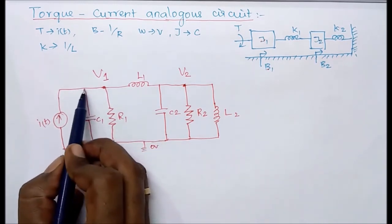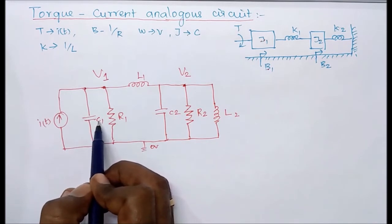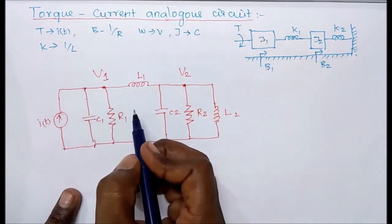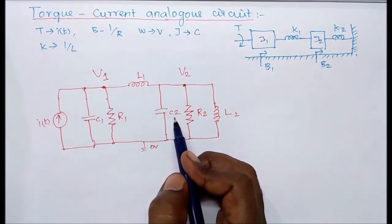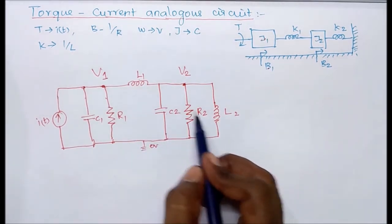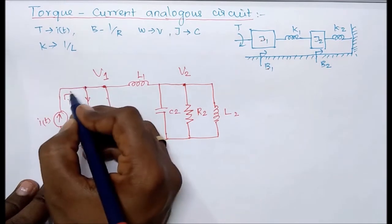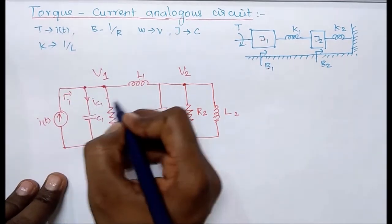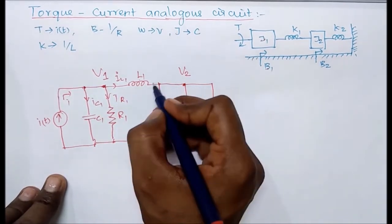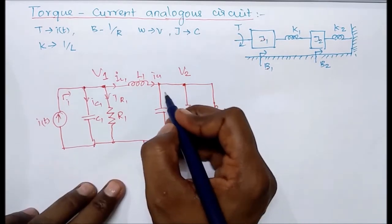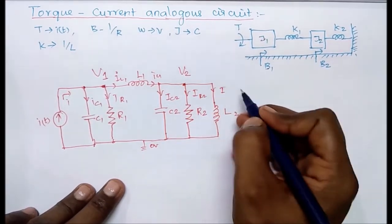The current through the capacitor C1 is determined by the potential across it, which is V1. The current through R1 is determined by the potential V1 as well. We can also mark the currents through the inductor L1, capacitor C2, resistor R2, and inductor L2. The input I(t) is the entering current at node one. IC1, IR1, and IL1 are all leaving currents at node one. IL1 is the entering current at node two, while IC2, IR2, and IL2 are leaving currents at node two.